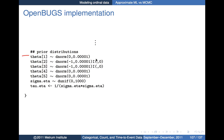The priors are generally weakly informative. Theta 1 is normal(0, 1e-5) — that's a precision of 10 to the minus 5, so a variance of 10 to the 5. Similarly for theta 2 and theta 3, but I want those restricted to be negative.